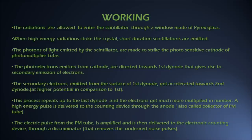The photoelectrons emitted from the surface of the cathode are directed towards the first dynode, giving rise to secondary emission of electrons with about zero velocity. The secondary electrons emitted from the surface of the first dynode get accelerated towards the second dynode, which is kept at higher potential in comparison to the first. This process repeats up to the last dynode, and the electrons get much more multiplied in number when they reach the anode. A high energy pulse is delivered to the counting device through the anode, which is also called the collector of the PM tube.